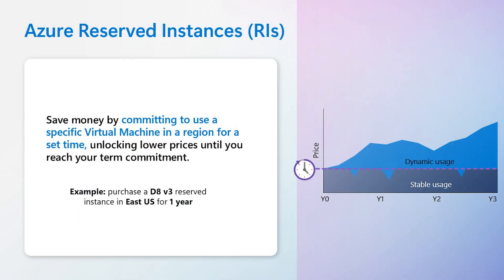We know Azure Reserved Virtual Machine Instances has been in the market for a while now, but can you briefly describe the basics of how it works? So Azure Reserved VM instances, more commonly known as Reserved Instances, are essentially a commitment you make to Azure. You're committing to a specific Azure VM in a specific region for a set amount of time. And in exchange of your commitment, you will receive a discount versus your pay-as-you-go pricing. This is a great option for predictable workloads.